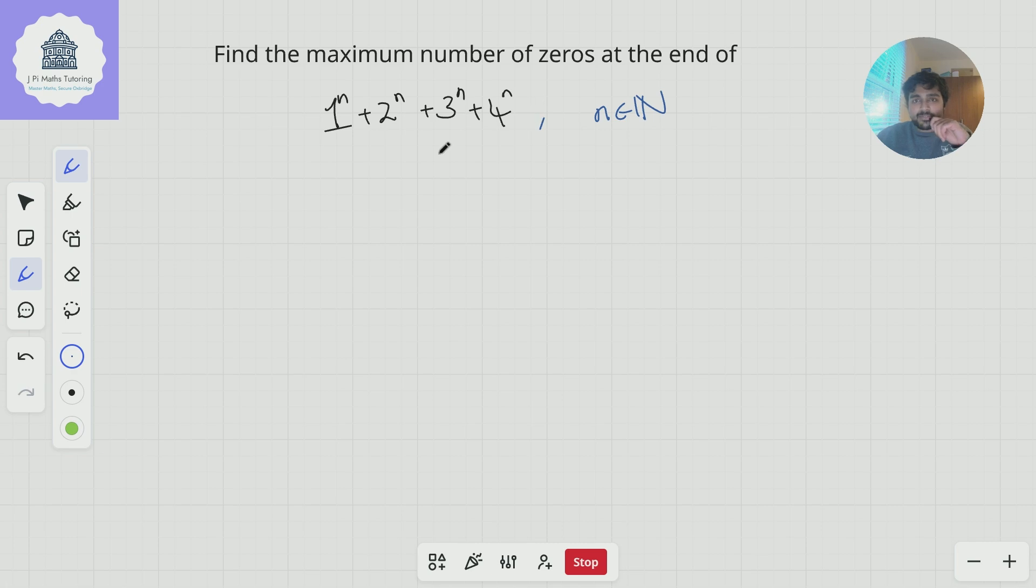We want to find the maximum number of zeros. First, let's play around with small values of n. When n=1, this is 1 + 2 + 3 + 4, which equals 10. That has one zero, so we can do at least one zero.